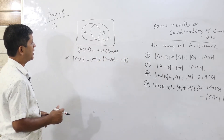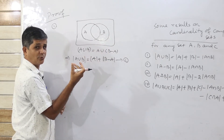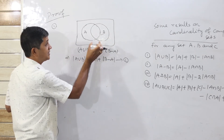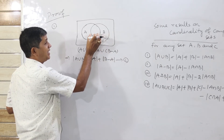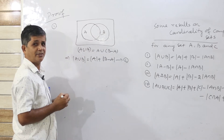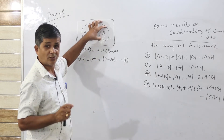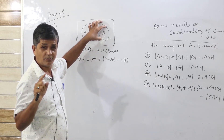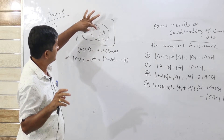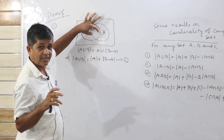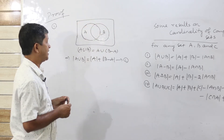Now, B can also be divided into two disjoint sets: B intersection A and B difference A. So B equals (B intersection A) union (B difference A), where these two parts are disjoint.